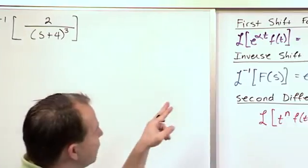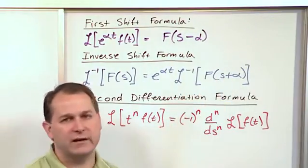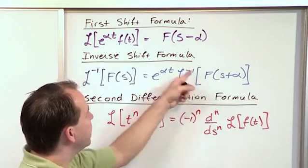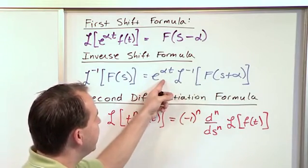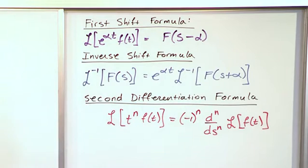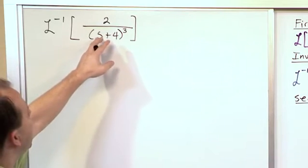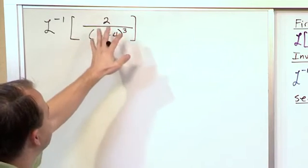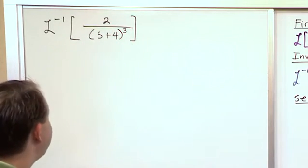but we do have an inverse shift formula. We can replace s with s plus a constant as long as we're willing to pull this out of the inverse transform. Presumably when we do that, we simplify things. You're really going to use that mostly when you have s plus something or minus something inside of a parenthesis like we have here.